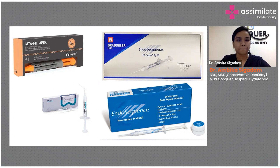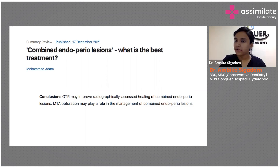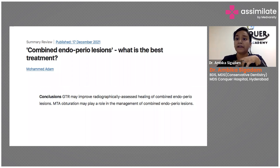Once the endo part is done — whether it's primary endo with secondary perio or any endo-involved case — you start with endo and complete it for better results. But if it's a true combined lesion or primarily a perio lesion, you need to concentrate more on the perio, because there will be more mobility and more bone loss — either horizontal or mostly vertical bone loss.